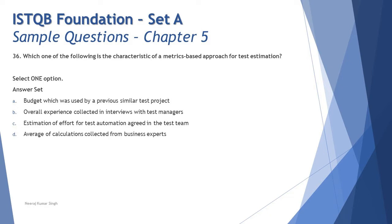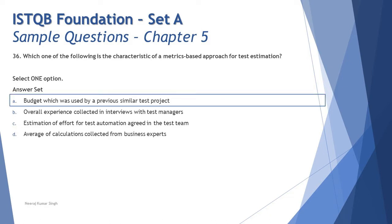Option D says 'average of calculations collected from business experts.' The word 'calculations' might lead you toward matrix-based, but it's collected from business experts, making it expert-based. The key is to read every word carefully — it doesn't matter if there are calculations; what matters is whether the source is previous data or expert discussion.